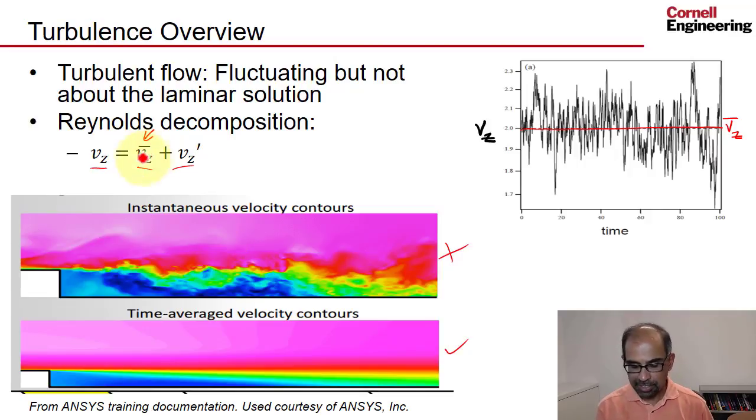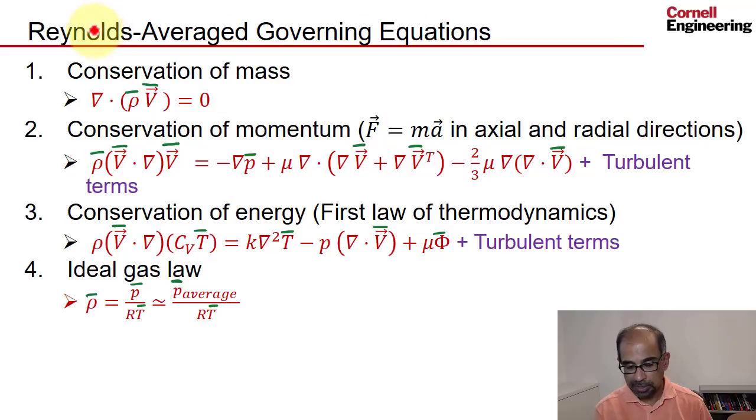To get the governing equations for the average, what you do is you take the Reynolds decomposition for each variable and you plug it back into the governing equations, and you get the Reynolds average governing equations that look the same as what we had before, except that now you have to put an over bar over all the variables to remind ourselves that this is the Reynolds average entity. Conservation of mass looks the same.